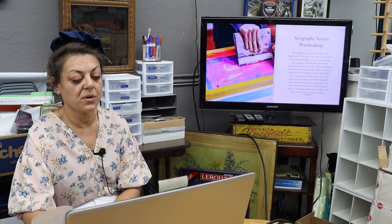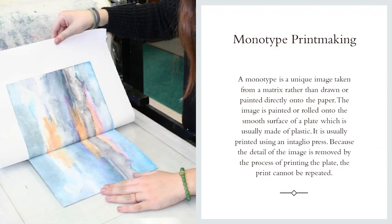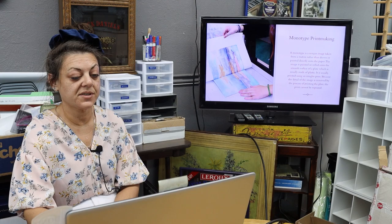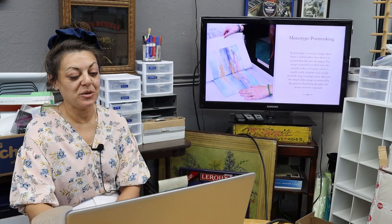Finally, we have monotype prints. Monotype is a unique image taken from a matrix rather than drawn or printed directly on the paper. The image is painted or rolled onto the smooth surface of a plate, which is usually made of plastic. It is usually printed using an intaglio press. Because the detail of the image is removed by the process of printing the plate, the print cannot be repeated.